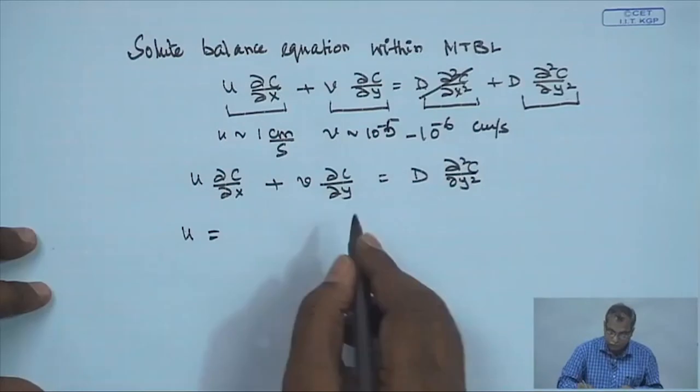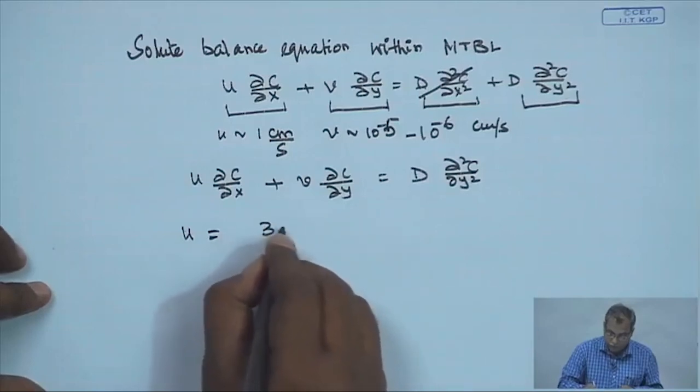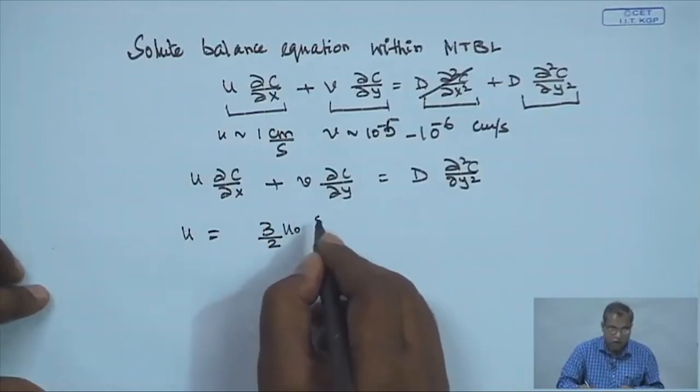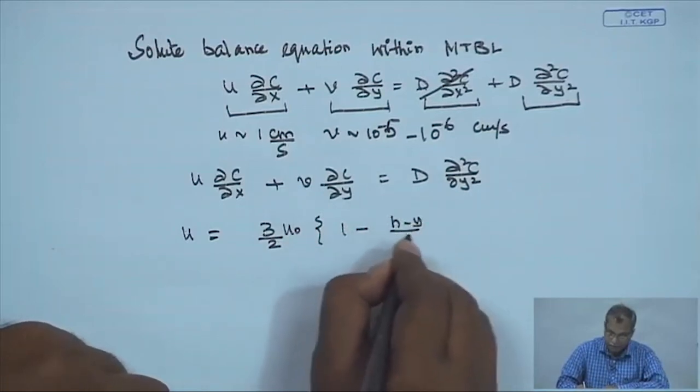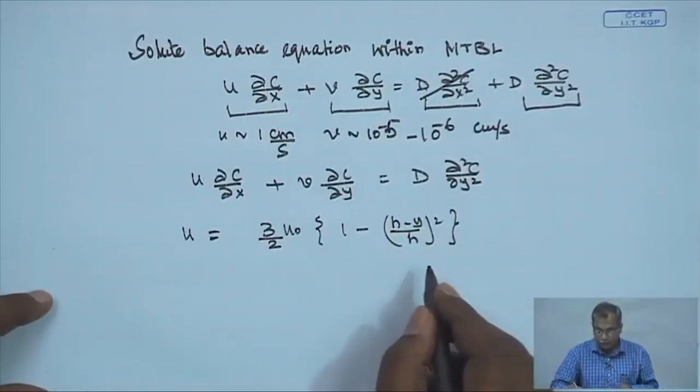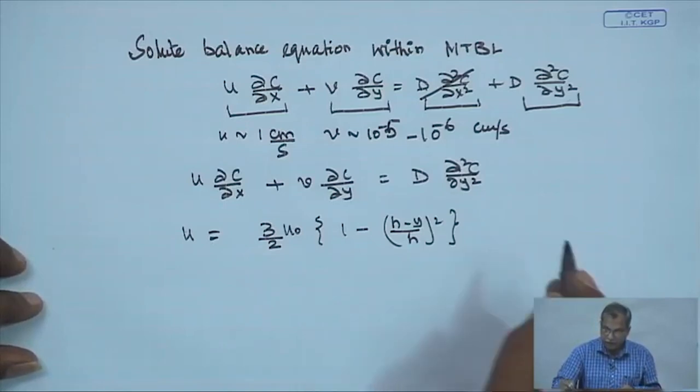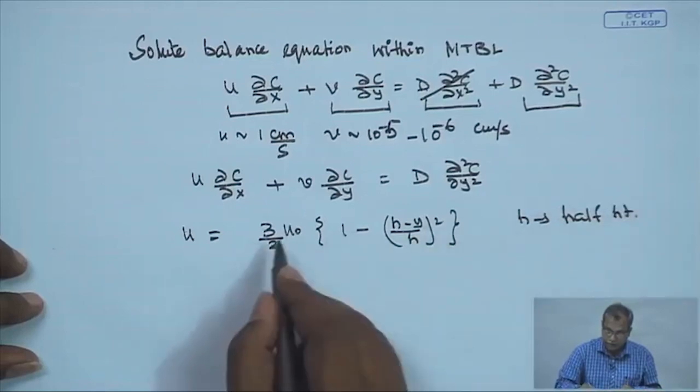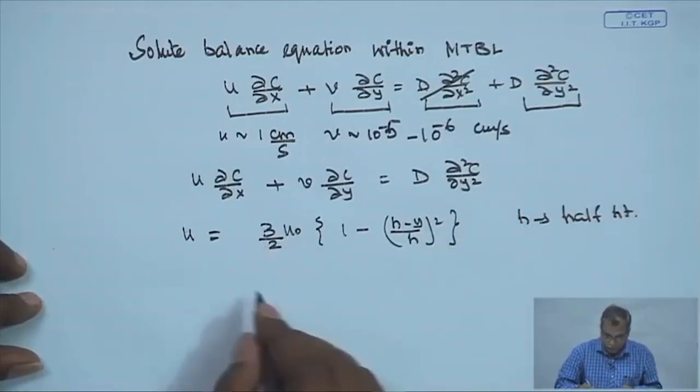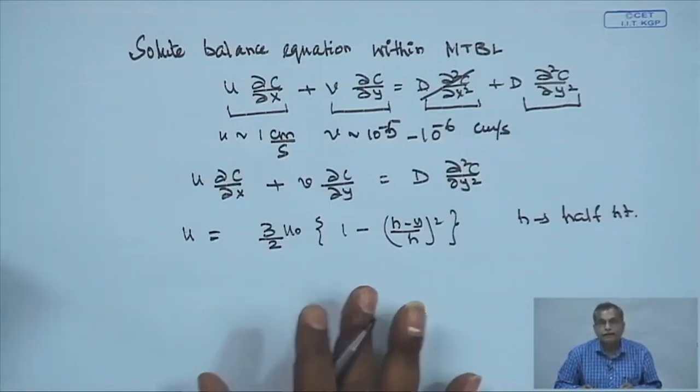The velocity profile for laminar flow in a rectangular channel is: u = (3u₀/2)[1 − ((h − y)/h)²], where h is the half-height and u₀ is the cross-sectional average velocity. In our case, the hydrodynamic boundary layer is fully developed — since its entrance length is only a few centimeters compared to the meter-scale channel — while the mass transfer boundary layer is still developing throughout the whole channel length.